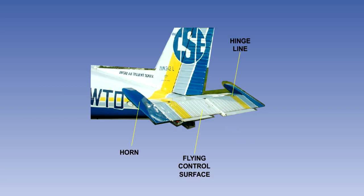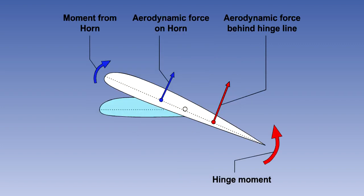The principle of horn balance is similar to that of the setback hinge. The horn is part of the control surface and is forward of the hinge line. In flight, when the control surface is displaced, as shown in the diagram, aerodynamic forces will be generated both fore and aft of the hinge line. This produces turning moments about the hinge, reducing the overall hinge moment. Once again, control effectiveness is unaffected.